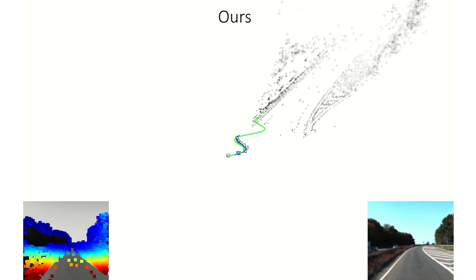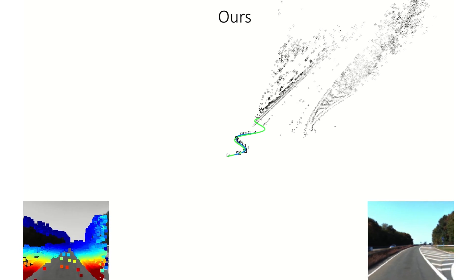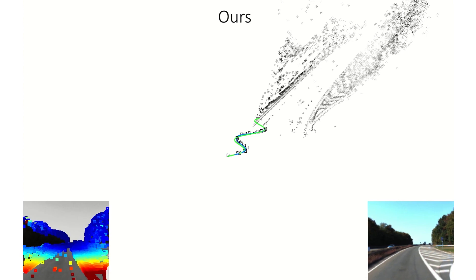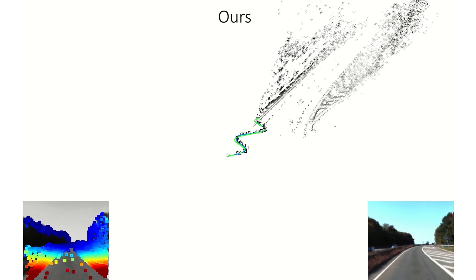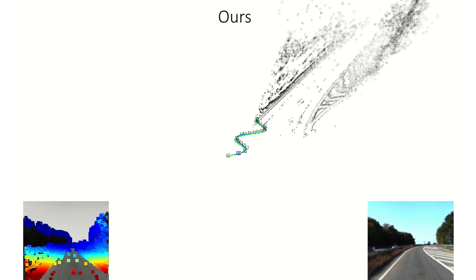For validation, we feed the synthetic views to a state-of-the-art SLAM system that estimates the camera pose based on these views. While views generated from our method can be used to faithfully recover the input trajectory,